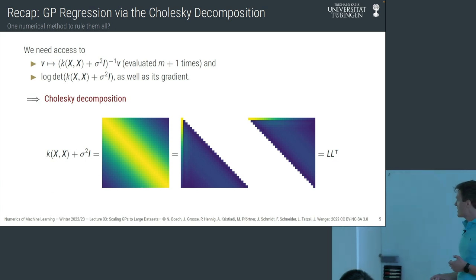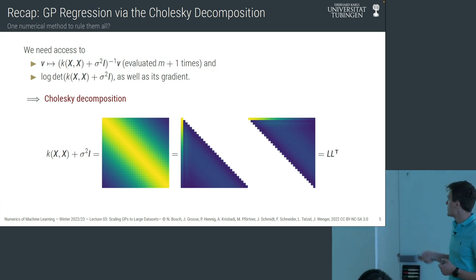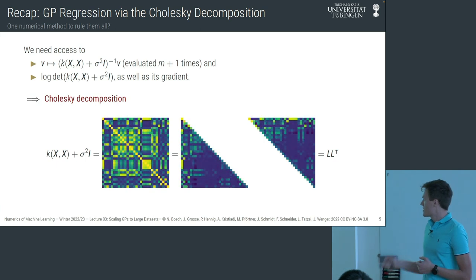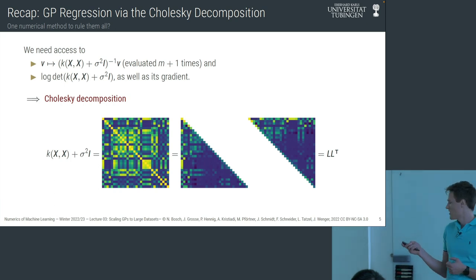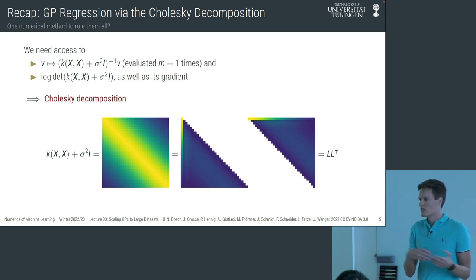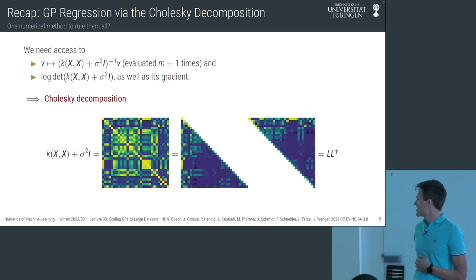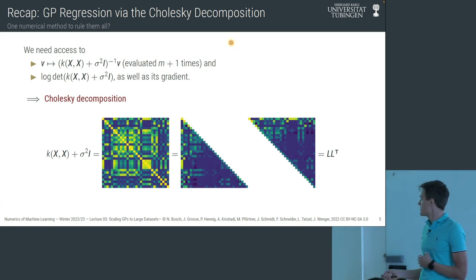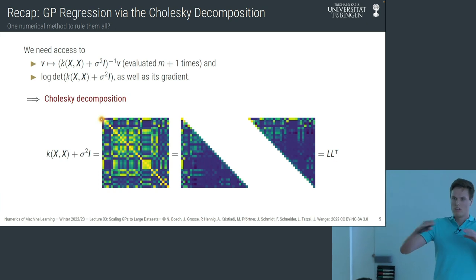Here's an illustration: on the left we have a kernel matrix — I believe a Matérn 3/2 kernel — and we get the Cholesky factors L and L-transpose. Kernel matrices don't always look this nicely ordered. This is a one-dimensional data set where data can be ordered smallest to largest. But in general, for high-dimensional data sets, the kernel matrix doesn't necessarily look this structured, because the correlation between two data points depends on distance.